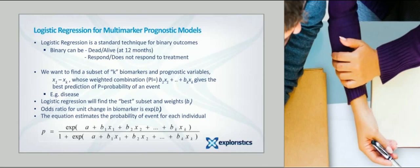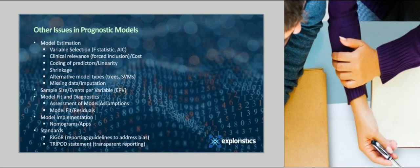There are a number of important issues in prognostic model development not dealt with in this webinar. We can't cover everything, but are listed here for context. Briefly, issues in variable selection and model selection and development, sufficient sample size driven by the number of events, model fit assessment, implementation of prognostic models via graphical tools such as nomograms or by apps, and the various recent standards, tripod and rigor, that advise on reporting model development and validation.